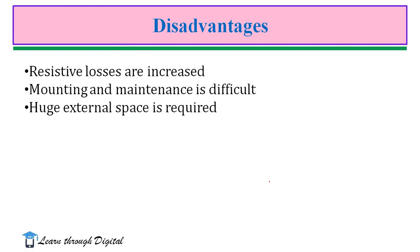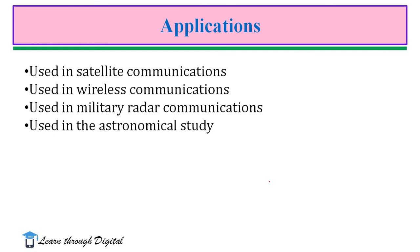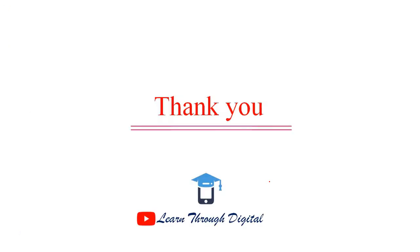One of the major disadvantages of antenna arrays is that they occupy more space. Mounting and maintenance is also difficult, and resistive losses are increased due to the larger number of elements used in the radiating system. Applications of antenna arrays include satellite communication, wireless communication, and military radar communications. Antenna arrays are also generally used in astronomical study. I hope you understand the types of antenna arrays. Thank you.